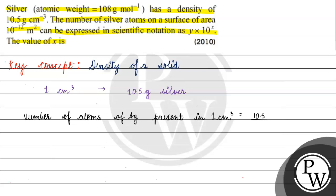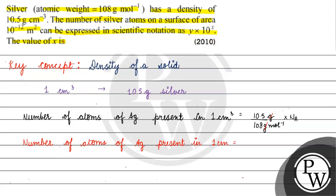The number of atoms is calculated as mass divided by molar mass, into Avogadro's number. The grams cancel out. So the number of atoms of silver present in 1 centimeter cube will be 10.5 divided by 108 mole, into Avogadro's number.